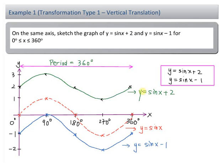Now y = sin x + 2 and y = sin x - 1 are two examples of vertical translation. If the number here is positive, you're going to move it up. And if the number here is negative, you're going to move it down. One important point is the period for these three graphs is still 360 degrees. That is, they make one complete cycle in 360 degrees.